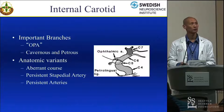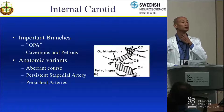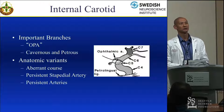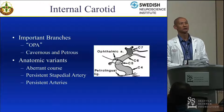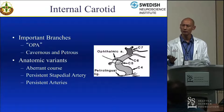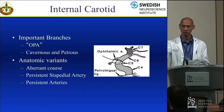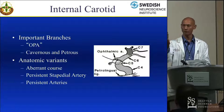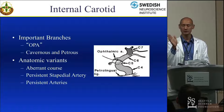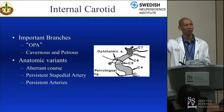Important branches of the supraclinoid ICA — you've all heard the mnemonic OPA: ophthalmic, posterior communicating, and anterior choroidal. These are the initial branches off the supraclinoid ICA. There are also smaller branches — superior hypophyseal — but angiographically you typically only see the posterior communicating and the anterior choroidal. The posterior communicating usually originates from the posterior genu of the supraclinoid ICA as it starts to run more superiorly, and the anterior choroidal will originate more off that vertical segment. On AP view, the anterior choroidal runs straight first and then takes a more lateral course as it heads toward the choroidal fissure in the temporal lobe.